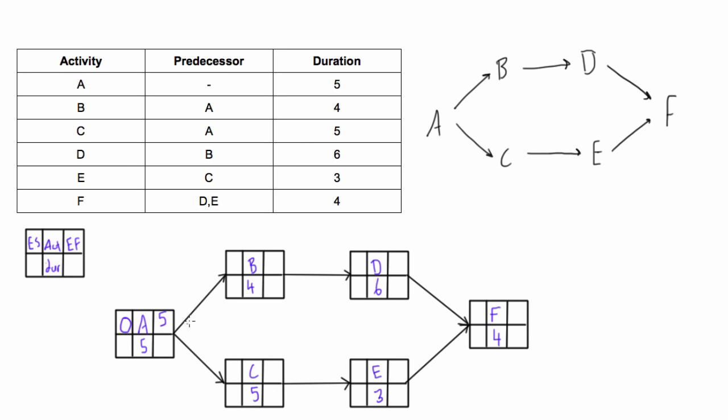We take the early finish of the preceding activity and write it as the early start of the succeeding activity. So we bring the five into both of these places, and then just continue on by adding the duration. Five plus four equals nine, and five plus five equals ten for activity C.